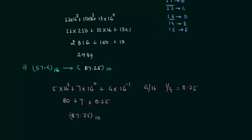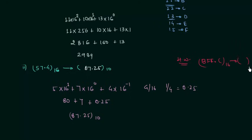Now we will move to the homework problem. There is only one problem in this part: BFF.C in hexadecimal — you have to calculate the decimal equivalent of this hexadecimal number. This is all for this presentation. If you have any doubts, go ahead and ask in the comment section. See you in the next one.